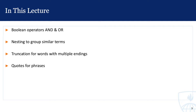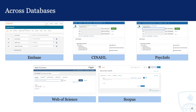Specifically, we'll focus on using the Boolean operators AND and OR to combine search terms, nesting to group similar terms, truncation to search for words with multiple endings, and quotes to search for phrases. While this lecture focuses on PubMed, the techniques we're discussing work in most literature databases such as Embase, CINAHL, PsycInfo, Web of Science, and Scopus.